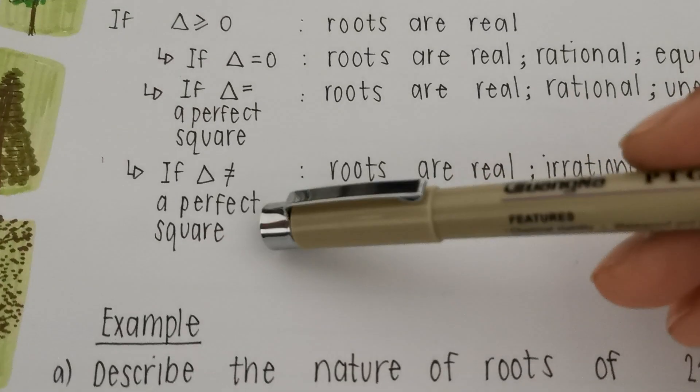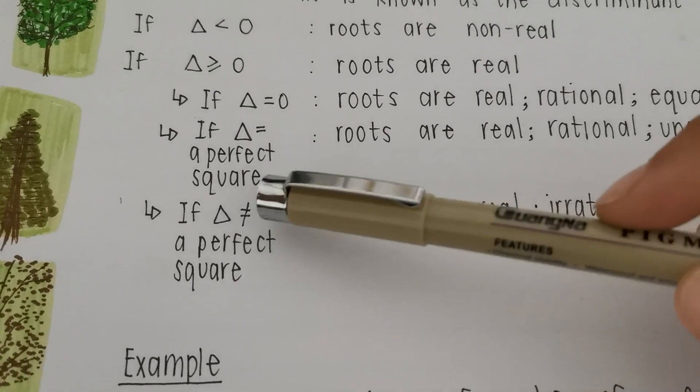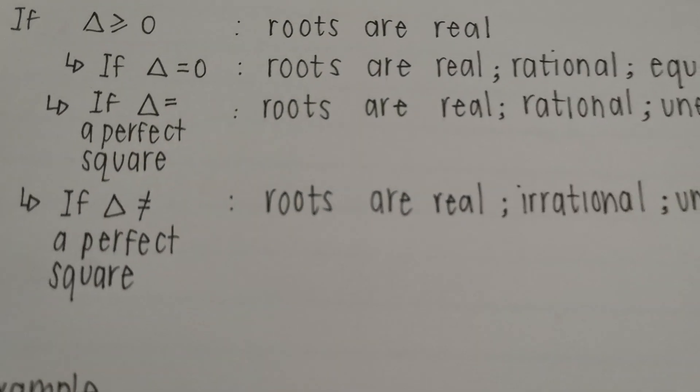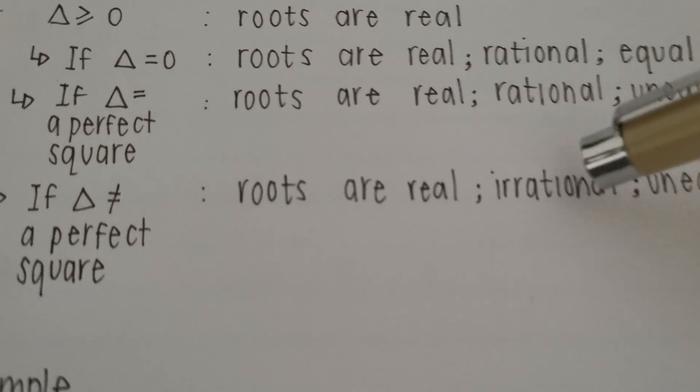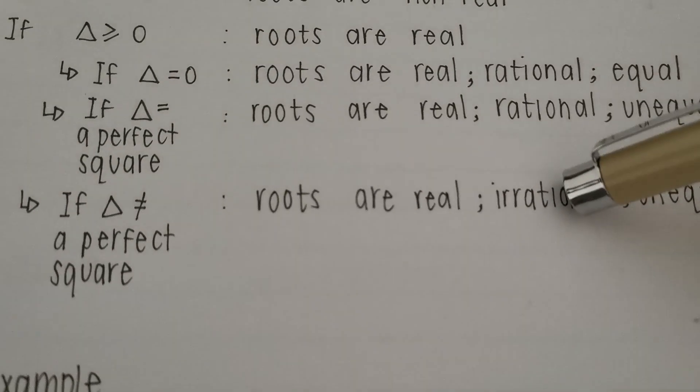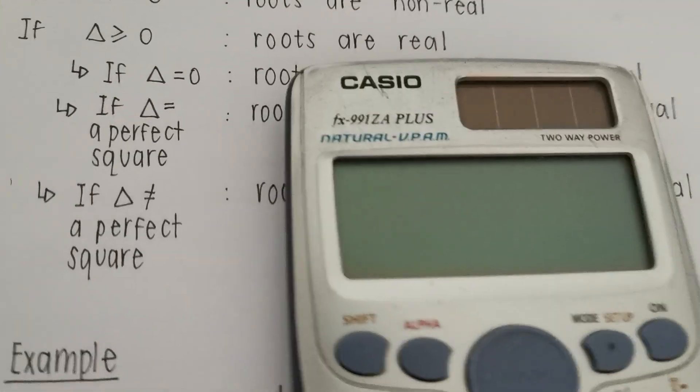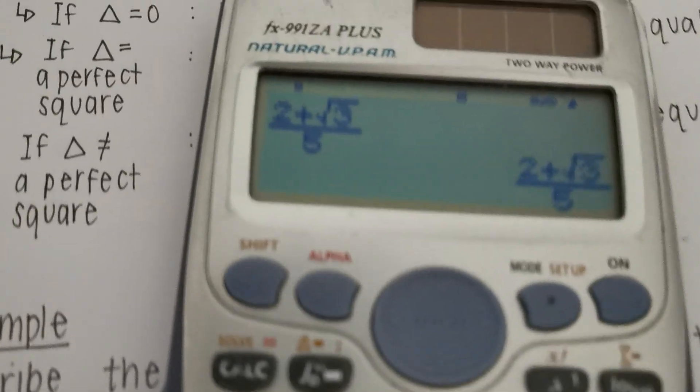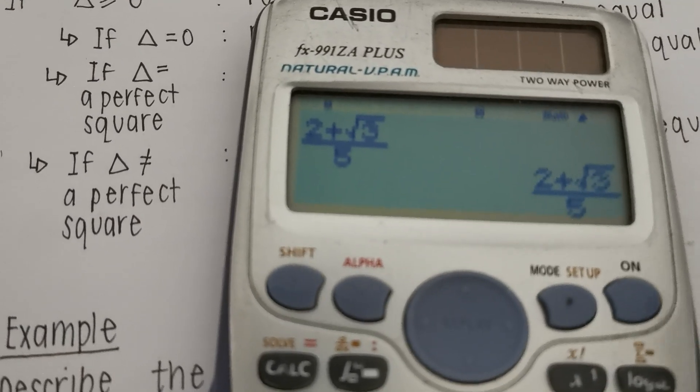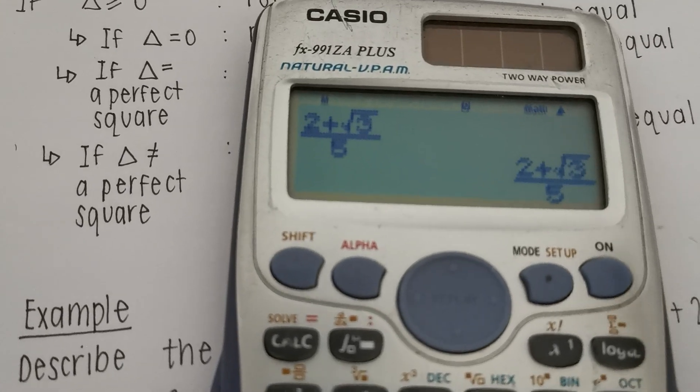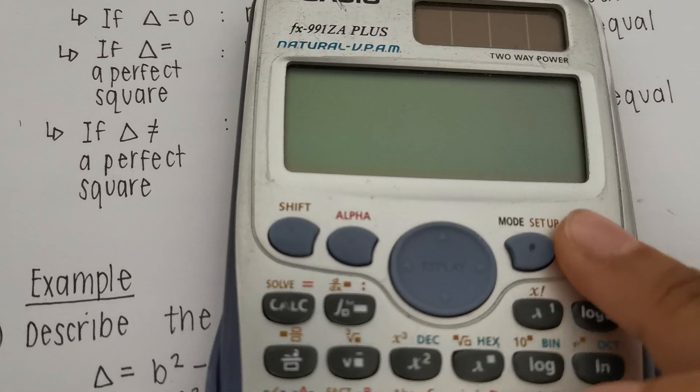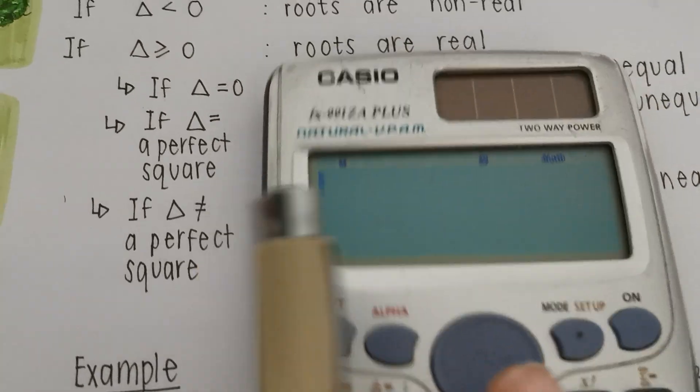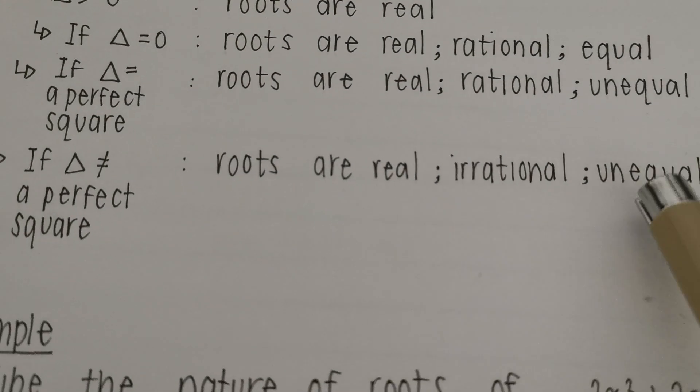Now don't get confused between unequal and irrational and non-real. It's very common people mix all of those things up. Unequal just means that one root is going to be x equals negative 3 and the other root will be x equals positive 3. That's what we mean by unequal. If this discriminant works out to something that is not a perfect square, that's why I put a line through the equal to sign, the roots are still real so they can be plotted on a Cartesian plane, they just are irrational. Again, don't get confused between irrational and non-real. Irrational is just a surd. Let me give you an example. I'm going to type in an irrational number in my calculator like this.